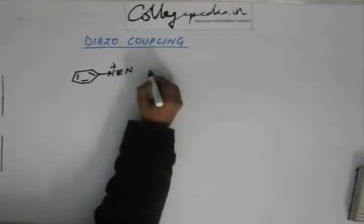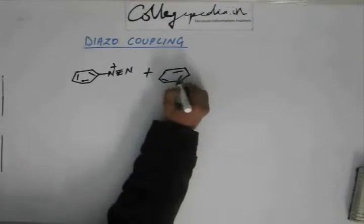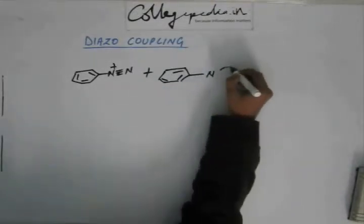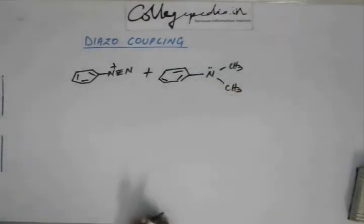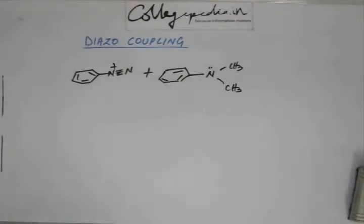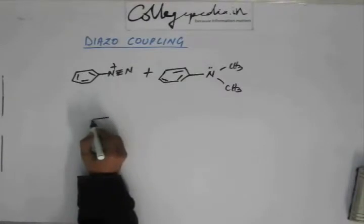We have a diazonium salt, and if we take N,N-dimethyl aniline, then this nitrogen again has a lone pair and it will be pumping that lone pair into the phenyl ring, developing negative charge at ortho and para positions. Because of steric hindrance at the ortho position, preferably the reaction will take place from the para position, and when this carbon attacks this nitrogen, a diazo compound is developed.